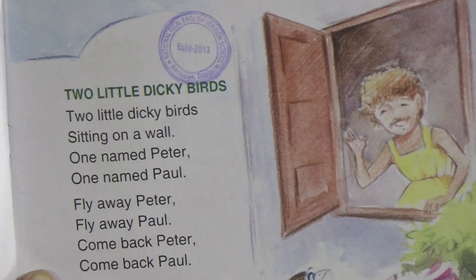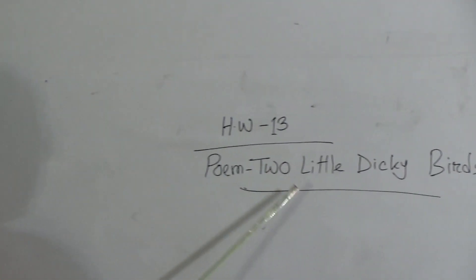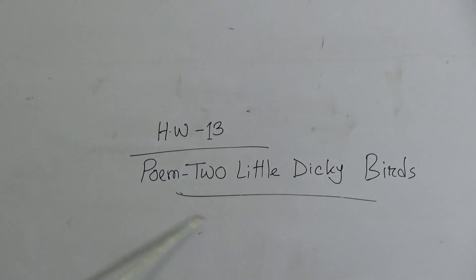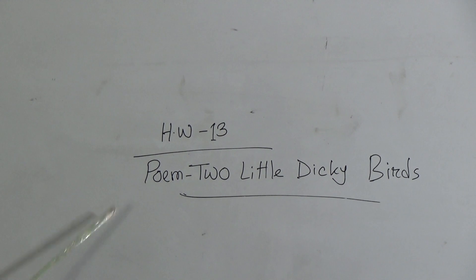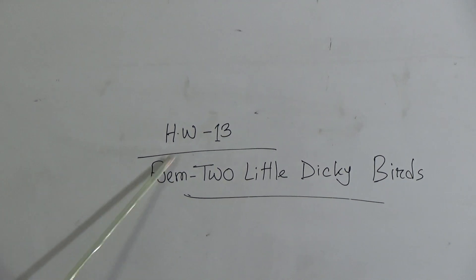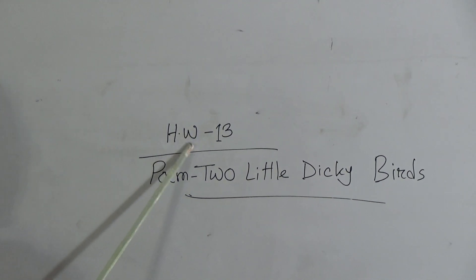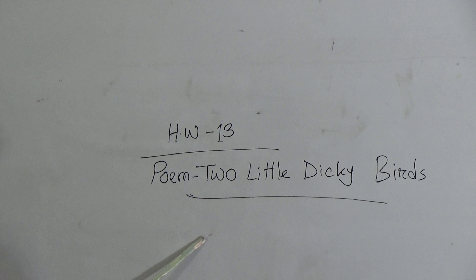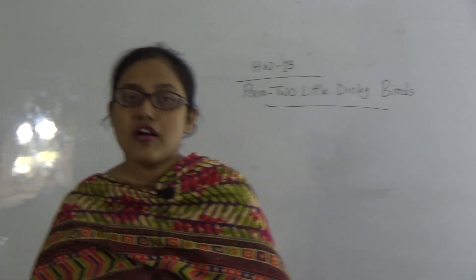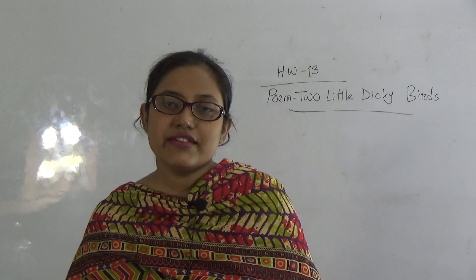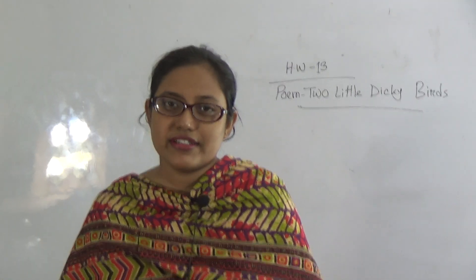Come back Paul. And students, now this is your homework. HW number 13 — you write Two Little Dicky Burst. This is your homework and you must mention the number HW number 13. Okay students, that's all for today. See you in the next class. Inshallah. Allah Hafiz.